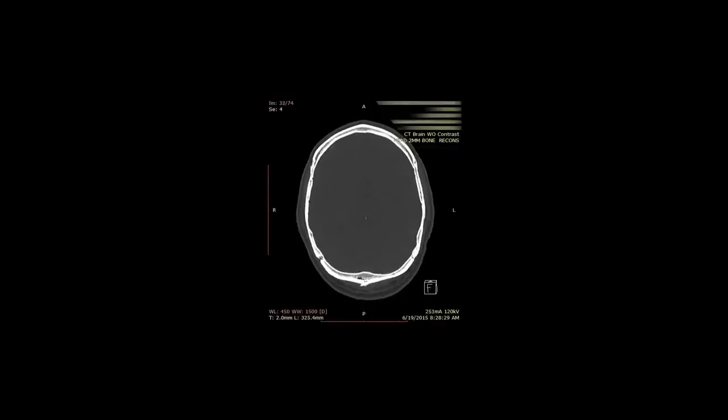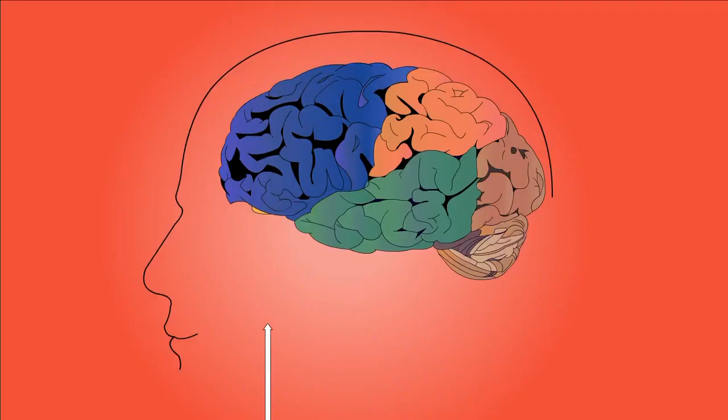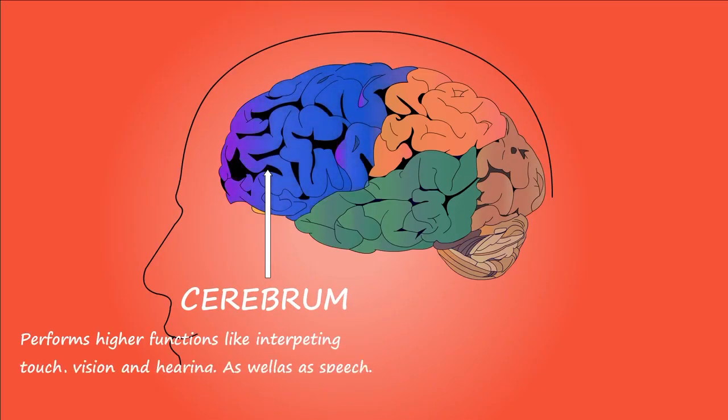When we think, it is actually the prosencephalon, to be specific the cerebrum part, which is at work. Our cerebrum can store information as neural links and correlate any event with stored information. That way we actually reach a conclusion, a decision.